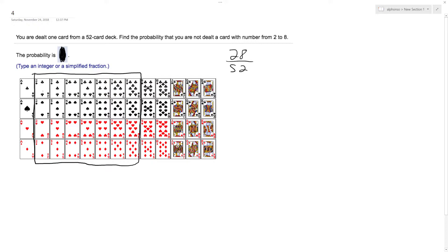Alright, but we want to know not being dealt that. So it's gonna be 1 minus 28 over 52, or to get common denominator, 52 minus 28 over 52.